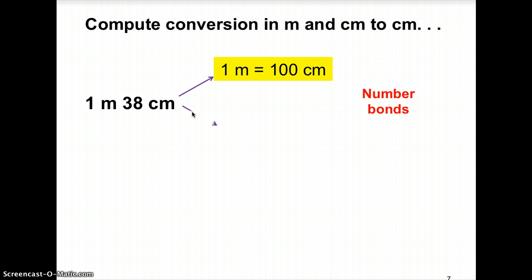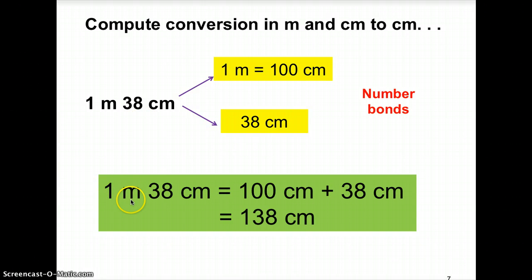The second part would be 38 cm, 38 centimeters. So, you have it. Number bonds is used to solve this question. So, 1 meter and 38 centimeters is equals to 100 centimeters plus 38 centimeters. And when you add these two together, since you have to check first, since they are of the same unit of measurement, cm and also cm over here, you are free to add both values and you will have 138 cm, 138 centimeters.